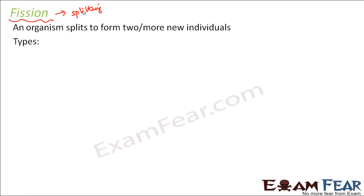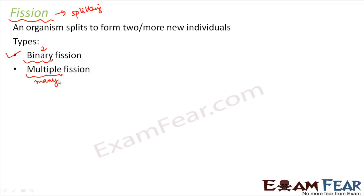Depending upon how many halves an organism splits into, there are two types of fission. First is binary fission — the word binary means two, so one organism splits into two new organisms. Second is multiple fission — one organism splits into many, more than two organisms.